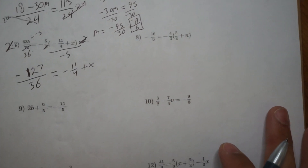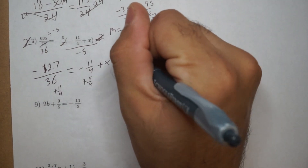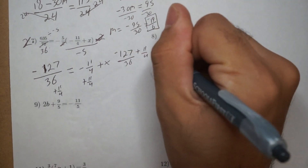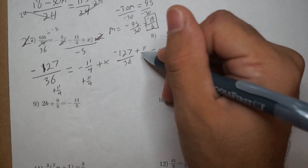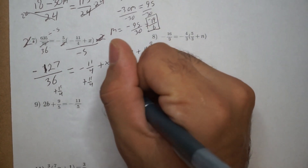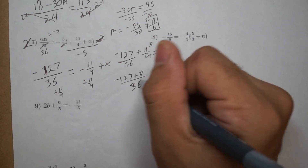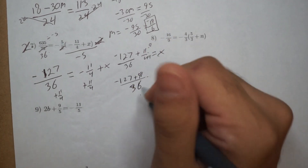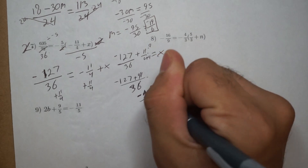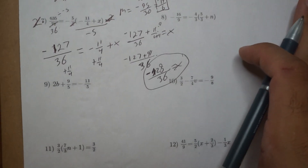Almost done — I just have to simplify this part because I need a common denominator. I add 11 over 4 to both sides: negative 127 over 36 plus 11 over 4 equals x. To get a common denominator of 36, I multiply 11 over 4 by 9 over 9, giving negative 127 plus 99 over 36. Combining those gives negative 28 over 36 equals x. I did the left side, which is tougher, so don't freak out about these problems.